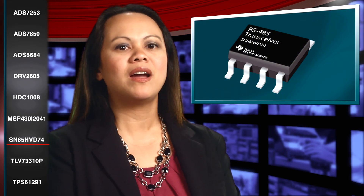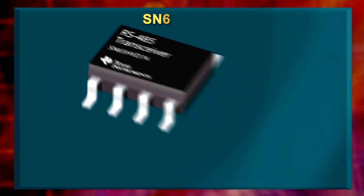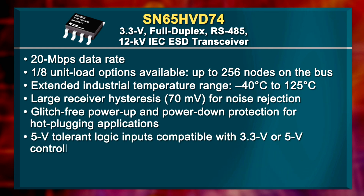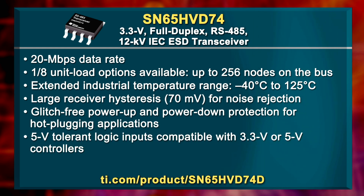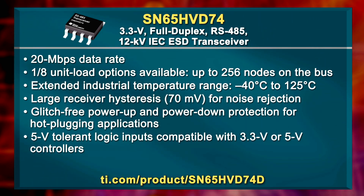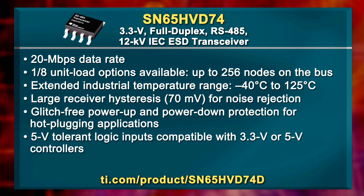This next device is a full duplex RS485 transceiver for devices such as wireless repeaters, tetra base stations, telecom baseband units and many more. The SN65HVD74 has a large receiver hysteresis providing immunity to conducted differential noise. Also, the wide operating temperature range enables reliability in harsh operating environments. See more online.